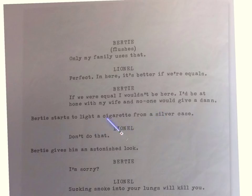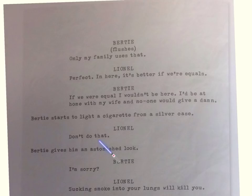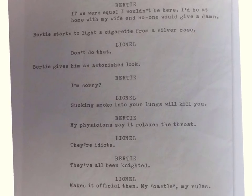Bertie starts to light a cigarette from a silver case - again minimal stage directions. Then Lionel delivers a very assertive imperative: 'Don't do that.' Bertie gives an astonished look. Again, this goes with a lot of the idea of establishing character and power in the conversation - who's the most powerful verbally.